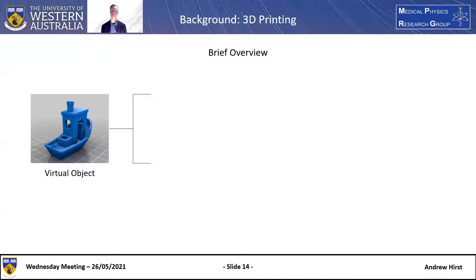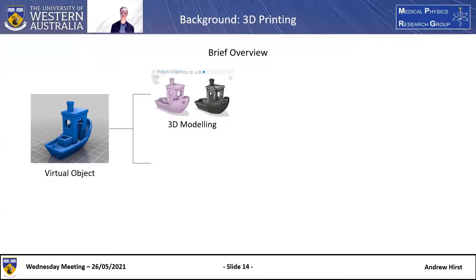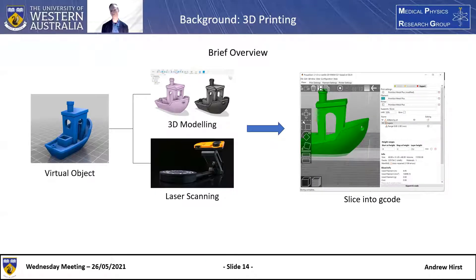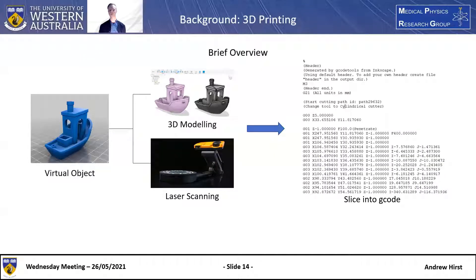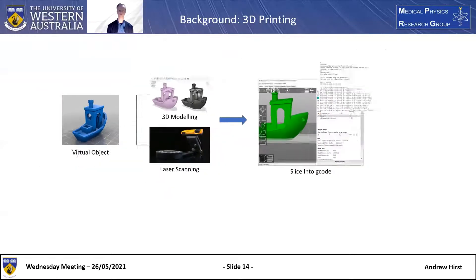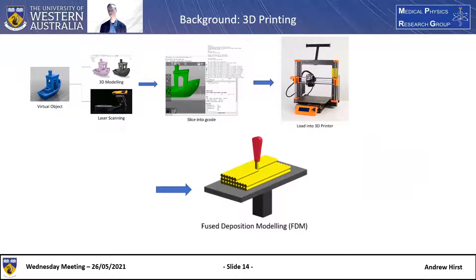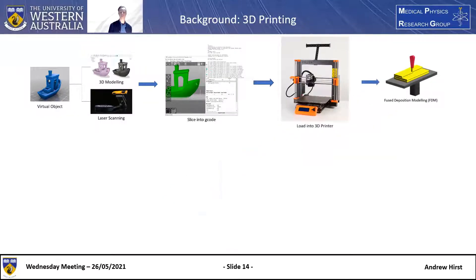Now I'll give a very brief overview of 3D printing. If you'd like to learn more, I did a workshop with a colleague Riley, available on the UWA Medical Physics YouTube channel. Starting off, you have a virtual object — either modelled in a program like Fusion 360 or scanned with a laser. This is sliced into G-code in a slicing program such as Prusa Slicer; essentially G-code is just instructions for the printer on where to move and how much filament to extrude. This is loaded into the 3D printer — the ones we have at the hospital are fused deposition modelling printers, which use a thermoplastic filament, heat it to its melting point, and lay it down layer by layer to achieve the final product.